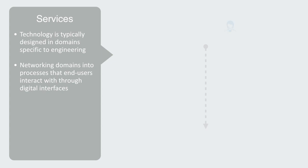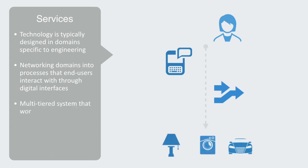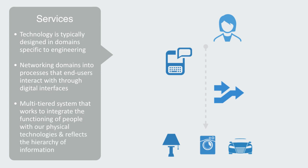From end user, to digital app, to service process, to physical technology — this is the multi-tiered framework that works to integrate the functioning of people with our physical technologies, and it reflects the hierarchy of information.